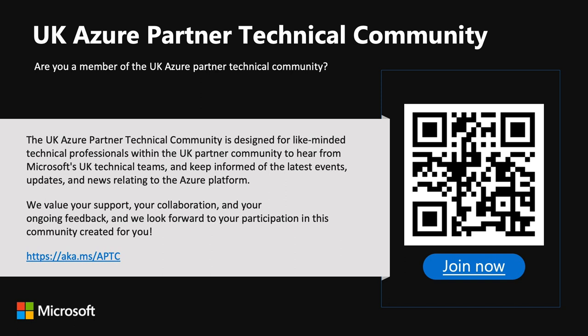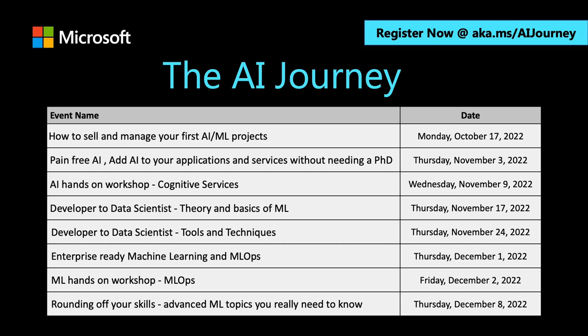An example of upcoming events: the AI Journey is one of the series of events we've got coming up soon. You can register at aka.ms/aijourney. This is a series of events going all the way from how to sell and build AML projects, all the way to some hands-on workshops around MLOps — an end-to-end series if you're interested in getting into AI and ML. Robin, who was presenting in the last session, is actually running this series.